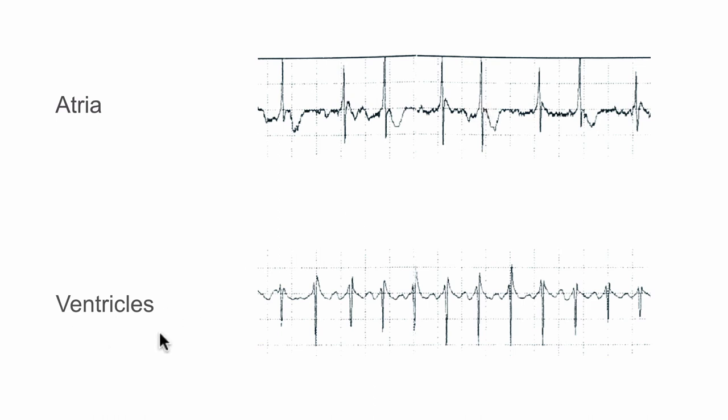So maybe there's a few ectopics going through or something else happening, but they're not regular. But if we look at the ventricular channel, we can see that they're more numerous and again, more ventricular events and atrial events suggestive of a VT.